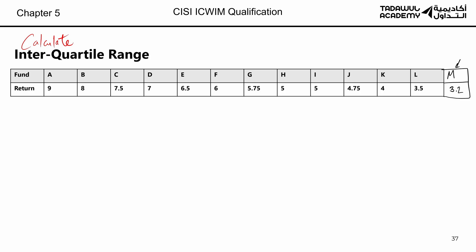The first thing to do when calculating the interquartile range is to think about what the name means. The range — from our previous videos — is the highest number minus the lowest number. The interquartile range is not simply highest minus lowest. The first step is to find the median of the data — the number in the middle of the set.